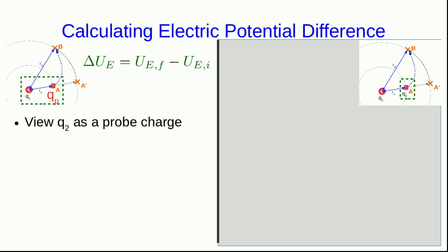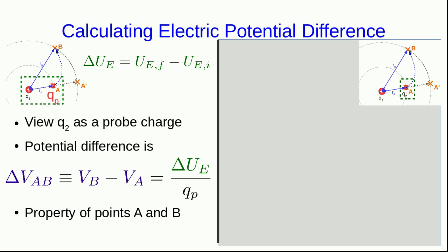So I'll call it qp since it's a probe charge. We've seen that the potential difference between points A and B is just the change in potential energy as we carry qp from A to B divided by qp, so that all dependence on the probe charge will drop out. This is then a property of the points A and B, and we think of it as being produced by q1.